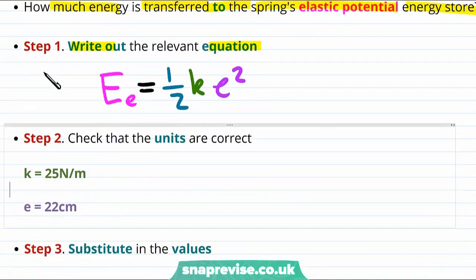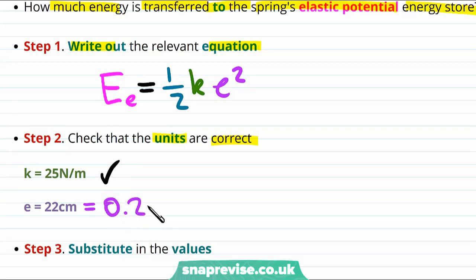And as always the next thing that we need to do is to check that the units we've actually been given are correct. Well the spring constant is in newtons per metres, so that's already all good. The extension of the spring however we currently know to be 22 centimetres, but we need it to be in metres. To get from centimetres to metres we divide by 100, so this is 0.22 metres.